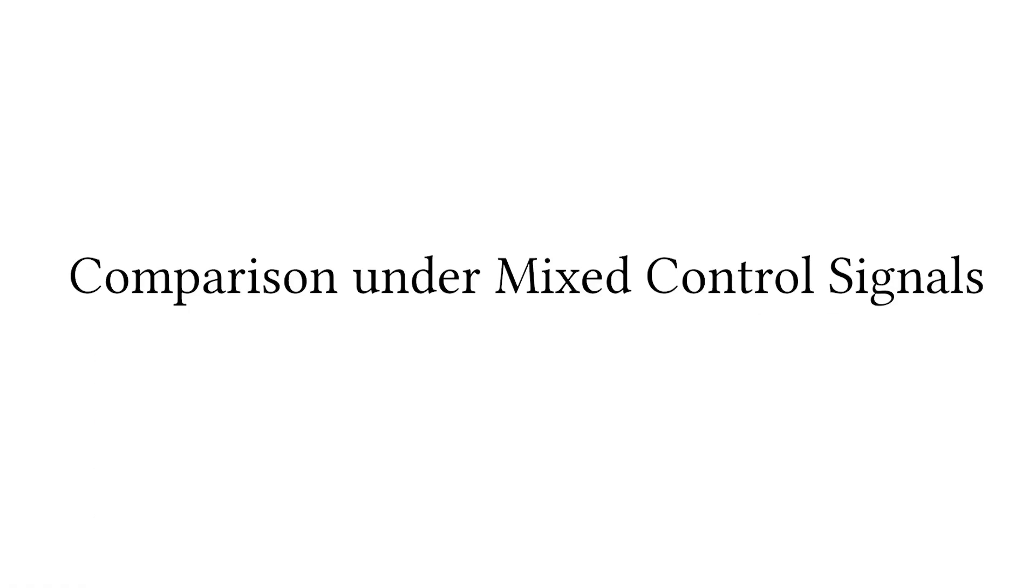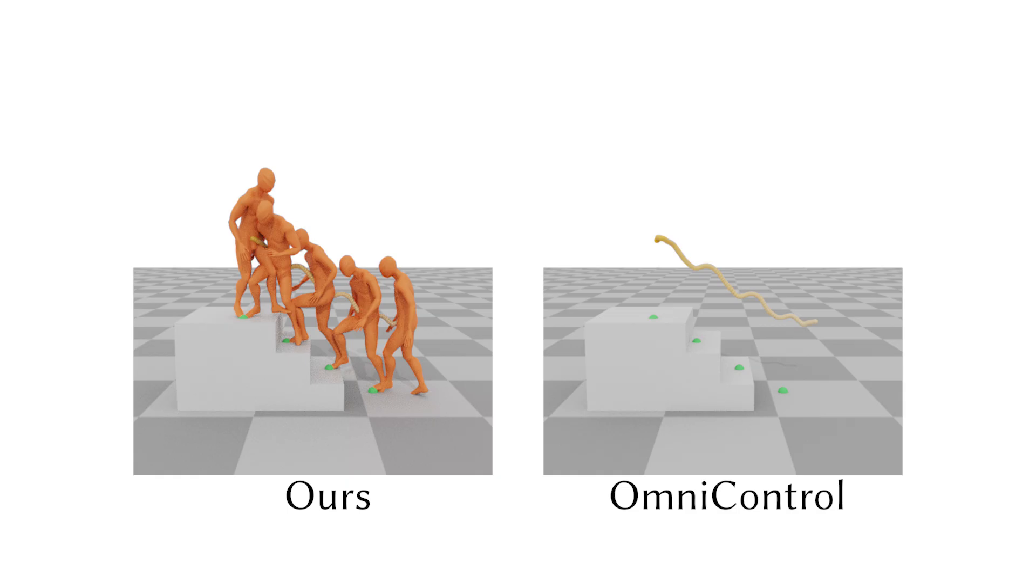Next, we compare the control accuracy between our method and Omni-Control under mixed dense and sparse control signals. In the previously shown example of walking up stairs with the sparse control signals as contact points, the character in our results steadily steps on the steps.